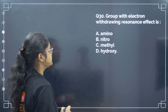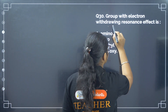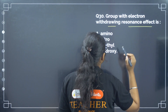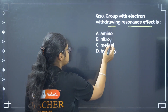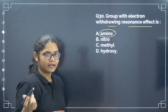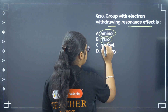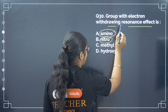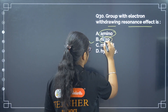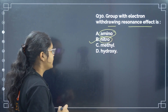The last question: the group with electron withdrawing resonance effect is? The amino group has a lone pair and is an electron donating group. The nitro group has electron withdrawing resonance effect. Correct answer is option number B.